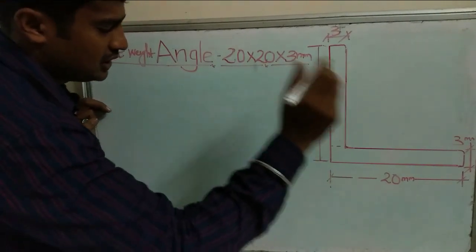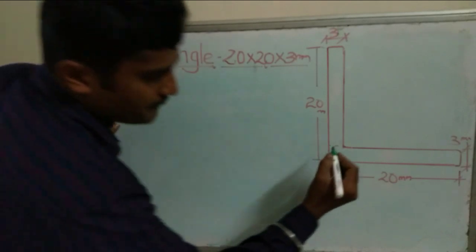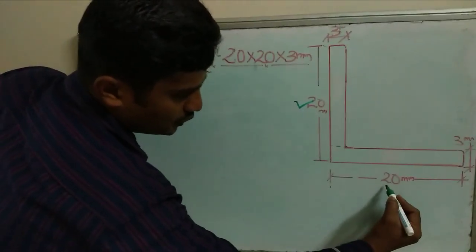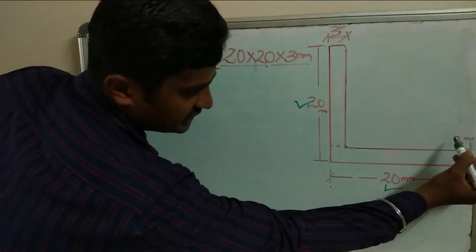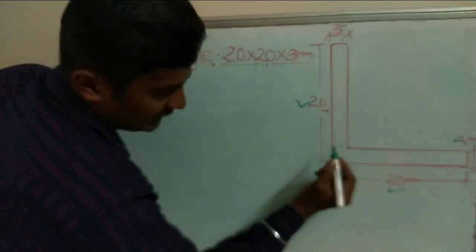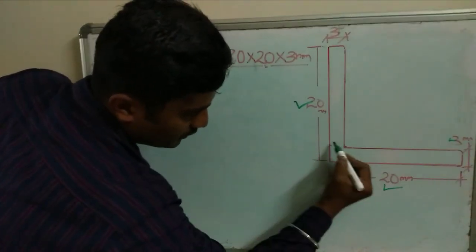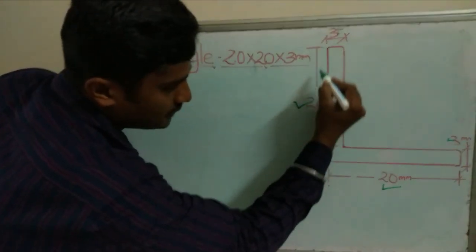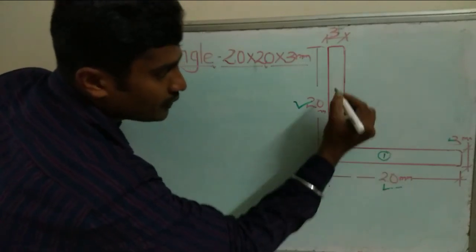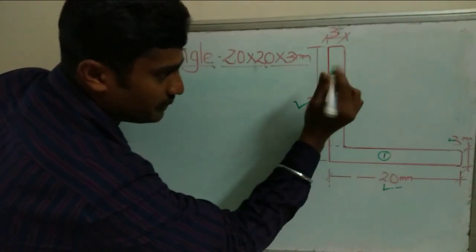First, we look at a size of 20 mm. The thickness is 3 mm. We will calculate Volume 1 and Volume 2, splitting the angle section into two parts.